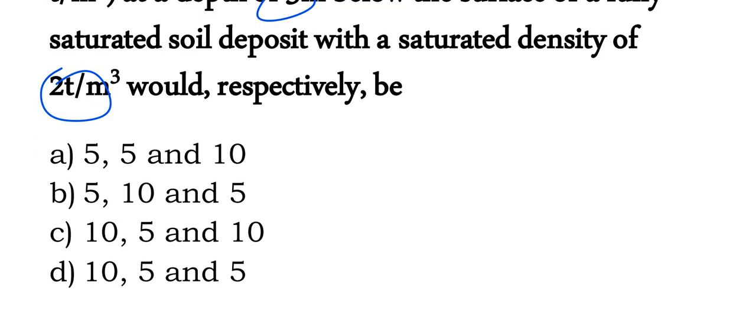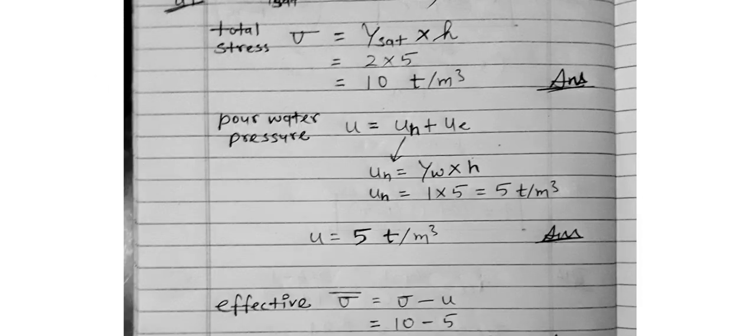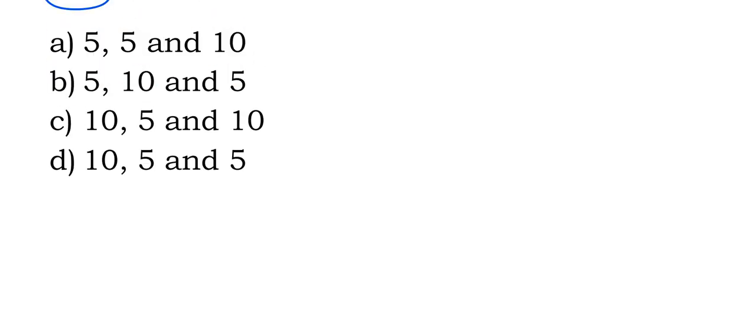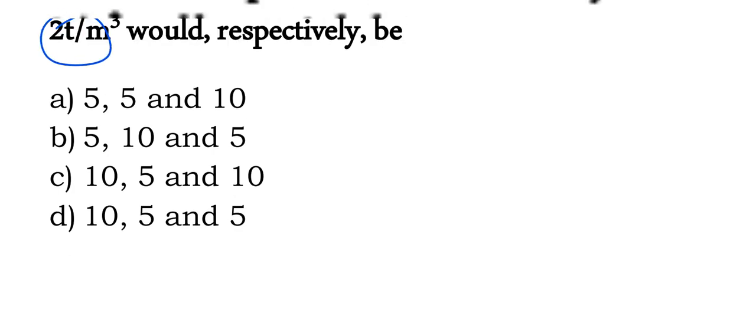Effective stress equals total stress minus pore water pressure = 10 − 5 = 5 ton per meter square. So option D is the correct answer. Total stress is 10, neutral stress is 5, and effective stress is 5.